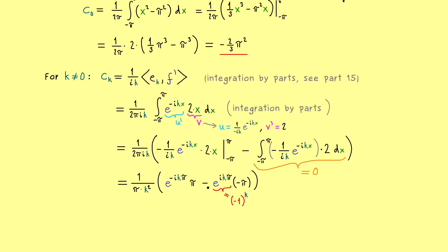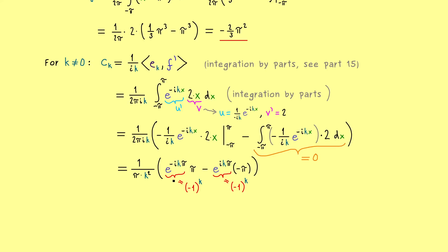We can write e^(ikπ) as (−1)^k, and the same holds for the term with the minus sign. So we get the same thing twice, meaning our result is simply cₖ = 2(−1)^k / k². Hence we have all the coefficients and can form the whole Fourier series, which we already know converges uniformly.